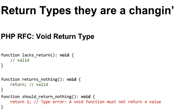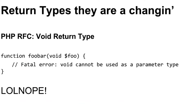You see three examples here. First, lax return: it has colon void, and I don't have a return statement at all — perfectly valid. Second, returns nothing: it has a return type of void and I have a bare return statement with nothing after it, which is the proper way to do it. Third, return should return nothing: I have void but I return an integer of one — this is going to throw a type error, because you've specified that this will always return nothing, and now you're returning something. That's a problem. You can't use void in parameters — that's just not going to happen.